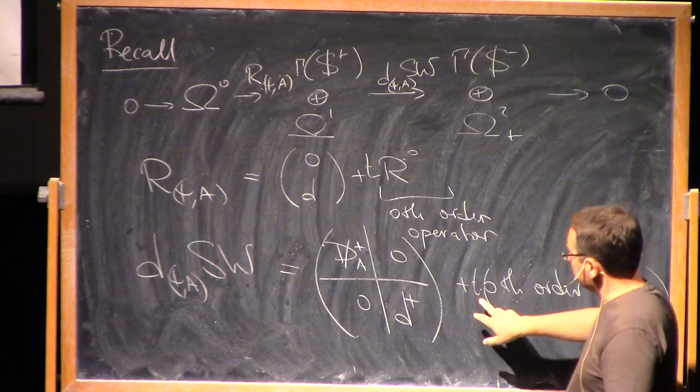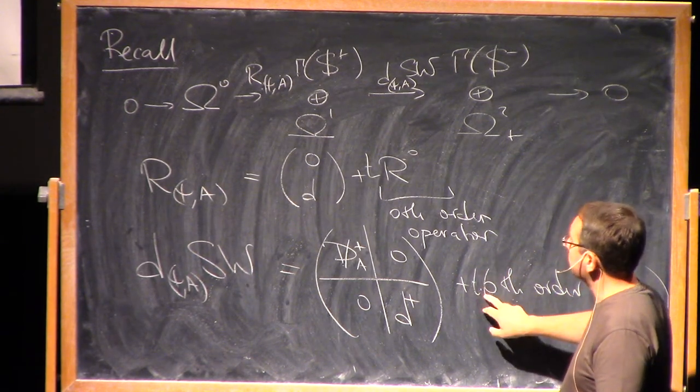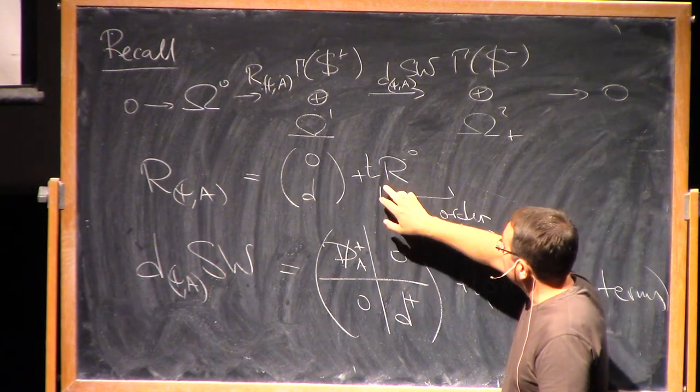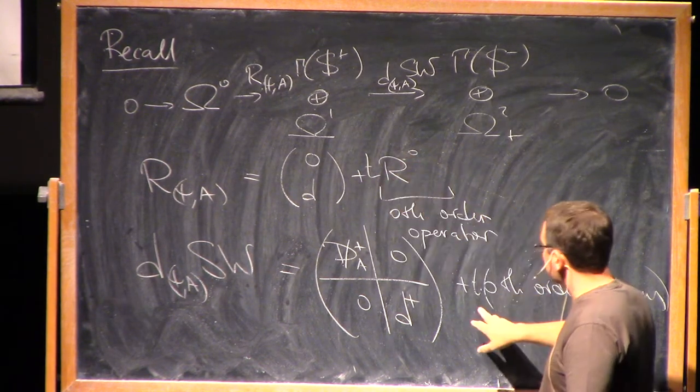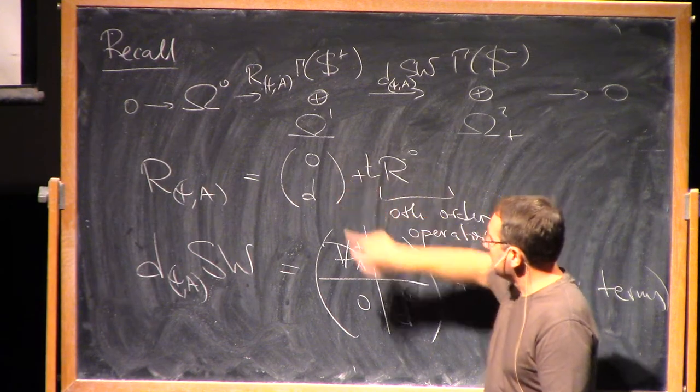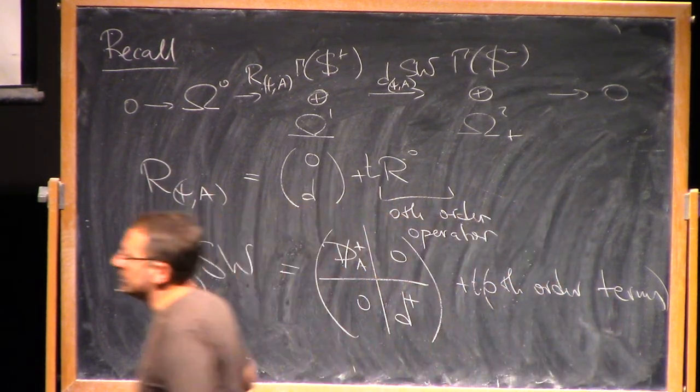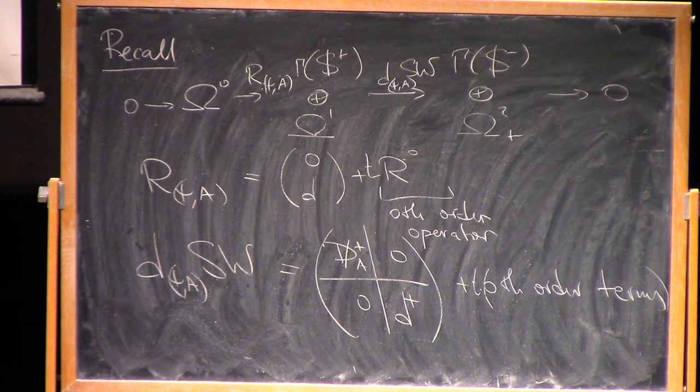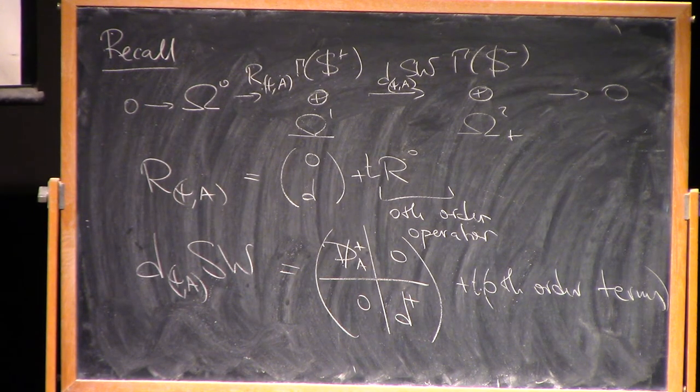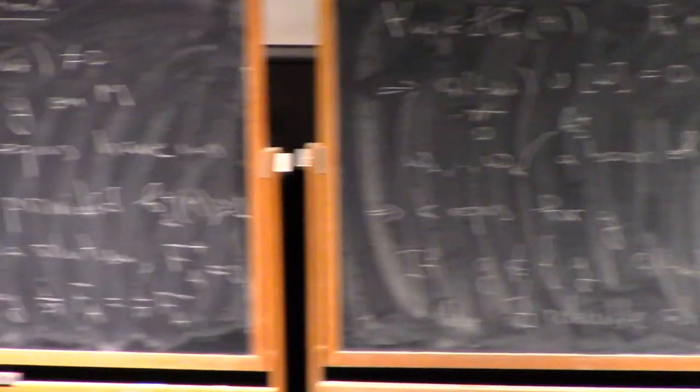This will be a homotopy through for whole maps between, for t equals 1, I have exactly the complex that I have, but for t equals 0, I will have just the terms that I have written down on the blackboard. So what we have actually for t equals 0 is a sum of two complexes, which we have already seen before.